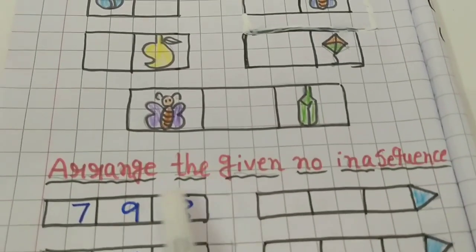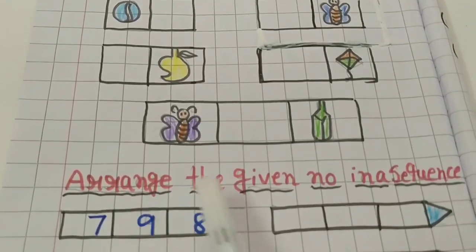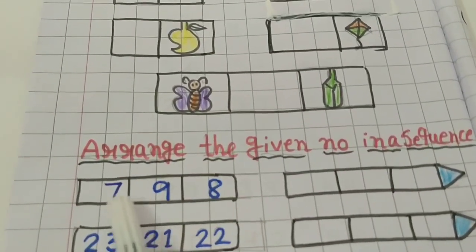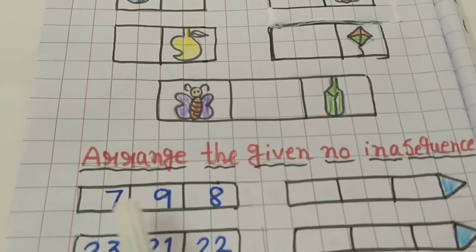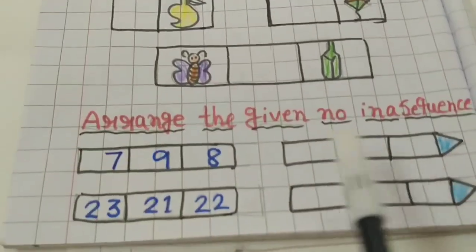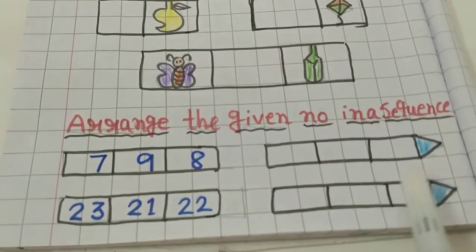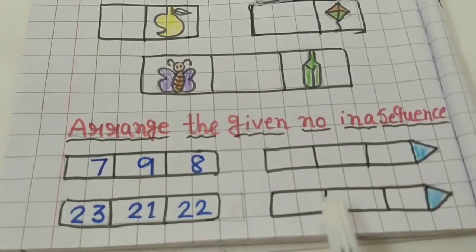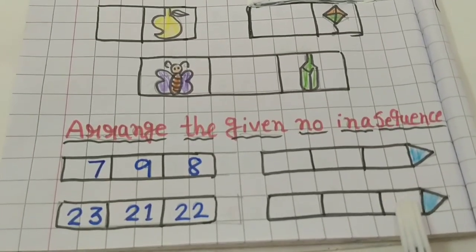Then I have written here: arrange the given numbers in a sequence. Here I have given three numbers and you have to arrange them in sequence — seven, eight, nine. Then here I have written 23, 21, and 22. So here also you have to arrange the numbers in sequence: first write 21, then 22, then 23.